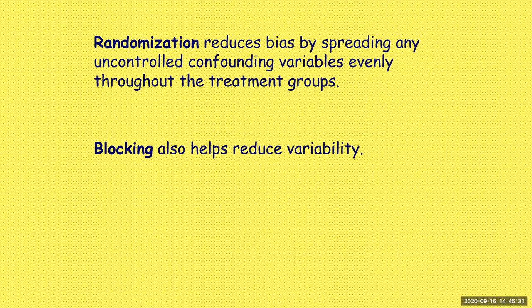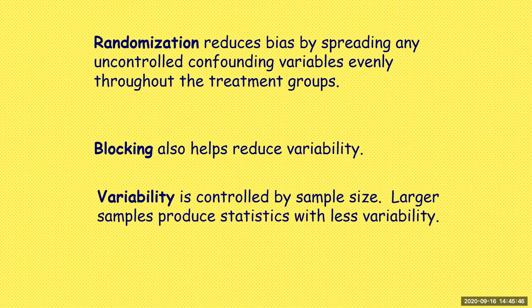Is there another way to reduce variability? Variability is controlled by sample size — larger samples produce statistics with less variability. To decrease variability, increase the sample size. The reason is that if you have a possible outlier in your sample, the more other data values you have, the less likely that outlier is to affect the data — the less pull that outlier has.